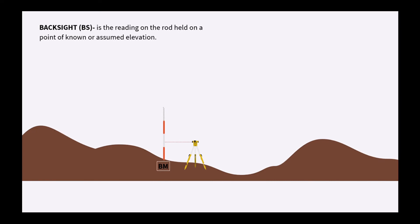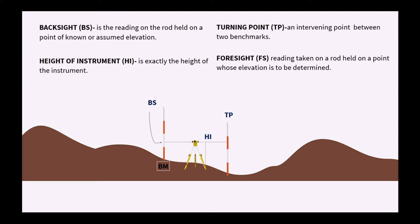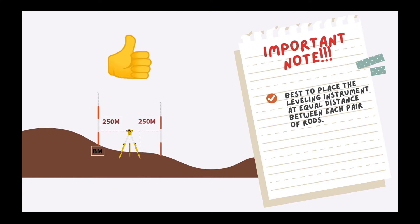Backsight, abbreviated as BS, is the reading on a rod held on a point of known or assumed elevation — the one sitting over the benchmark. This example shows the starting point is to the left of the leveling instrument; thus, the BS will always be the reading on the left rod over any turning point. Height of instrument, abbreviated as HI, is exactly the height of the instrument. On the right side, we take the reading over the turning point, TP, which is an intervening point between two benchmarks. Foresight is the reading taken on a rod held on a point whose elevation is to be determined. It's important to place the leveling instrument at equal distance between each pair of rods to eliminate errors of adjustment.